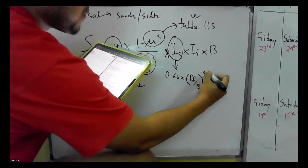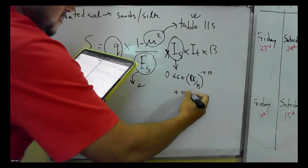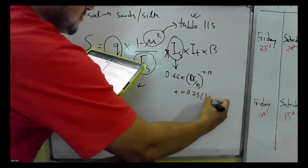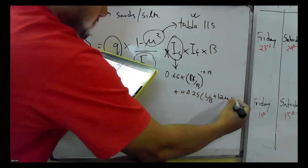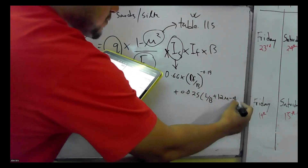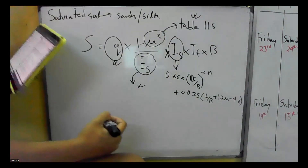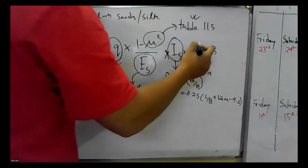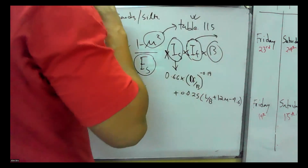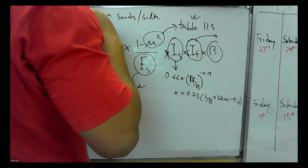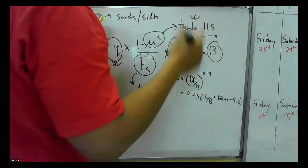The IF formula is: 0.66 into Df by B to the power minus 0.19, plus 0.025 into L by B, plus 12 mu, minus 4.6. That is the IF factor — you can get it from a graph or from the formula.